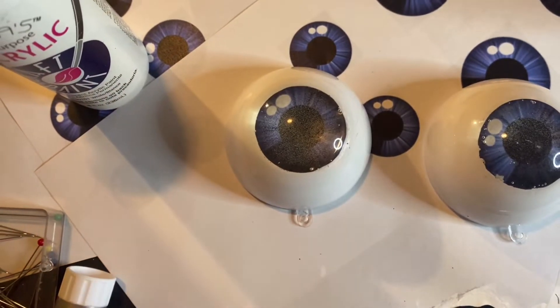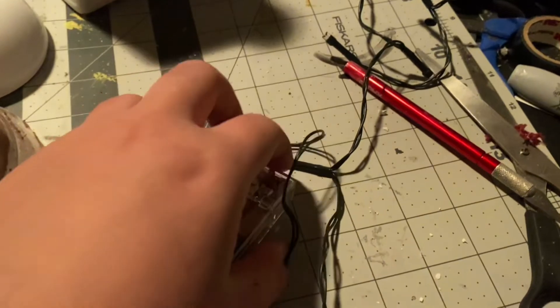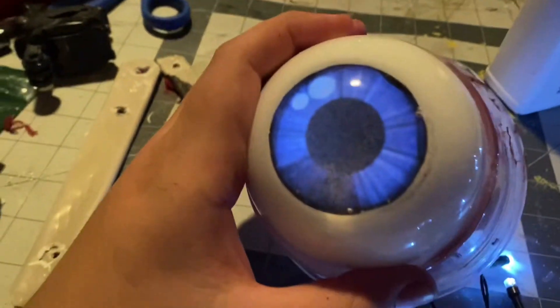So if you want to go the extra level, you can get some cheap LEDs. These are just Christmas lights I found. You can get those, and then put them behind the actual pupil, and it'll light up like this.